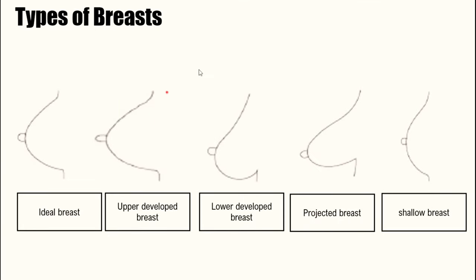We have a lot of different types of breasts but we are just going to cover a few of them. The first type is called the ideal breast. According to a journal I read, an ideal breast type is one that is proportional to a woman's body type and height. An ideal breast should not be too big and should not be too small.